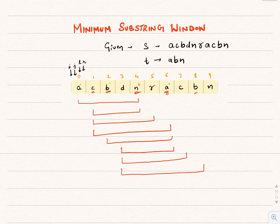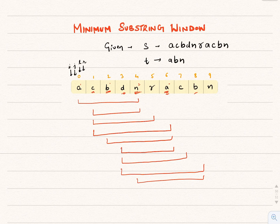We check whether we can shrink from the left. D is on the left and is not in the pattern, so we shrink. The window updates to index 4 to index 8, but its size is still 5, so we don't update our answer.